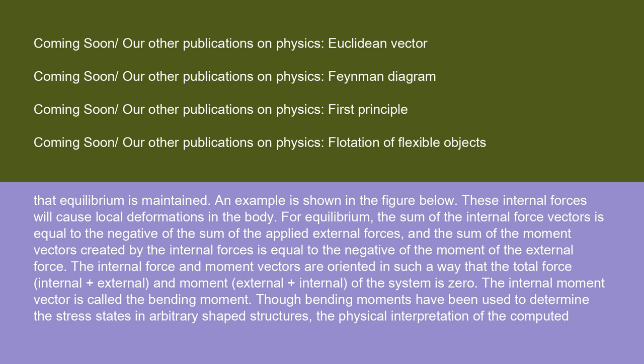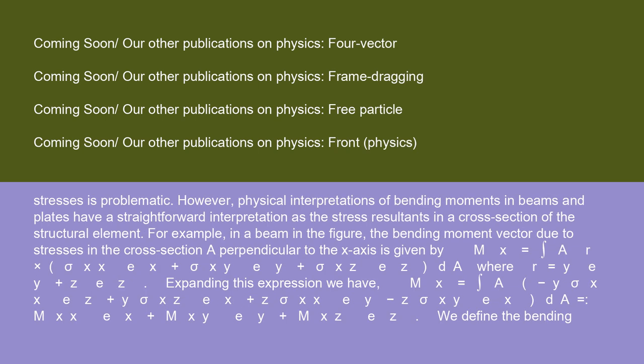The internal force and moment vectors are oriented in such a way that the total force (internal plus external) and moment (external plus internal) of the system is zero. The internal moment vector is called the bending moment. Though bending moments have been used to determine the stress states in arbitrary shaped structures, the physical interpretation of the computed stresses is problematic. However,